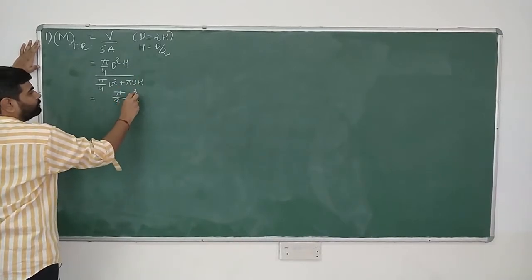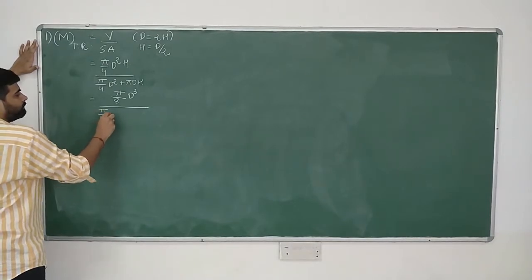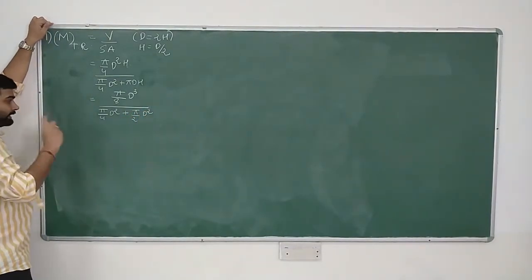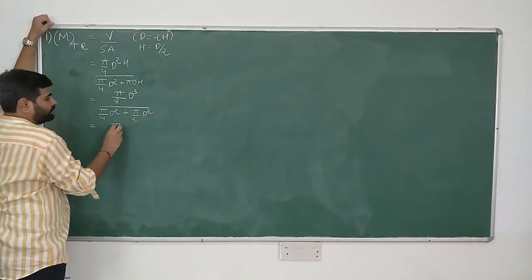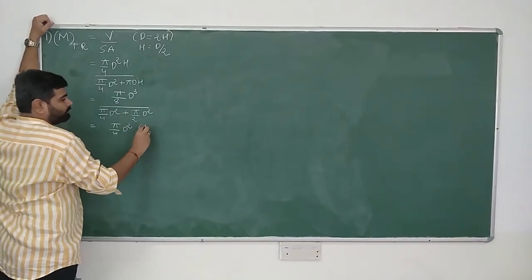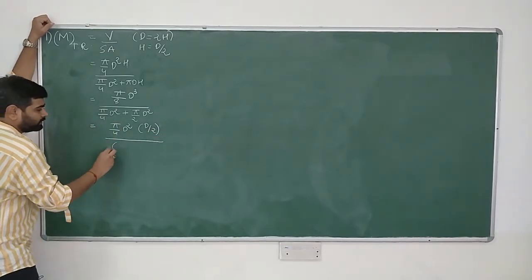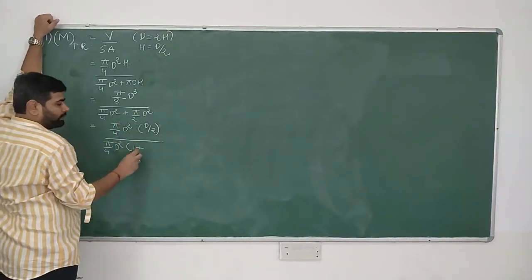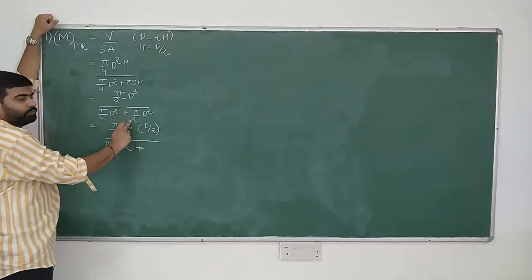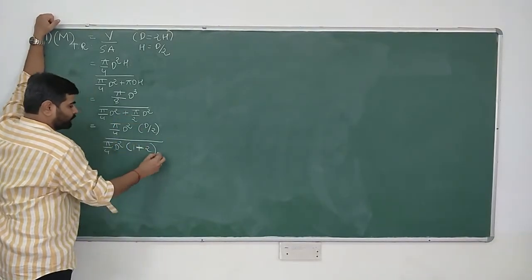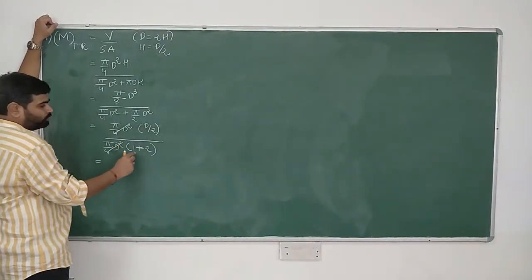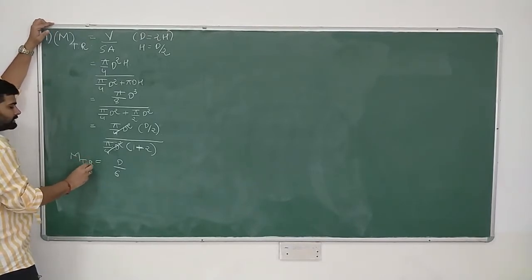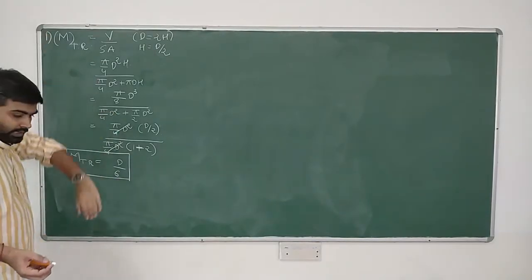Substituting h = d/2, the volume becomes (π/8)d³ and the surface area becomes (π/4)d² + (π/2)d². Taking (π/4)d² common from numerator and denominator, we get (d/2) divided by (1 + 2) = d/2 divided by 3, which equals d/6. So the modulus of a top riser is d/6.